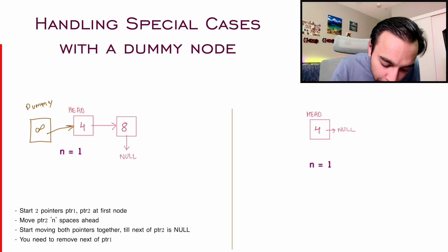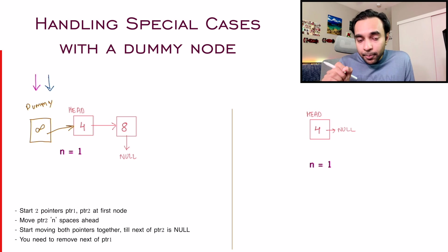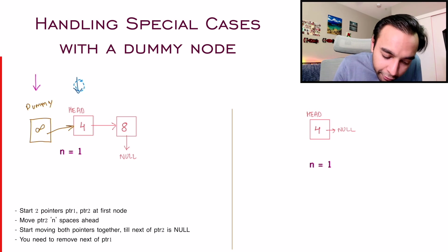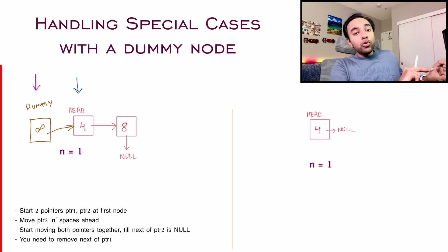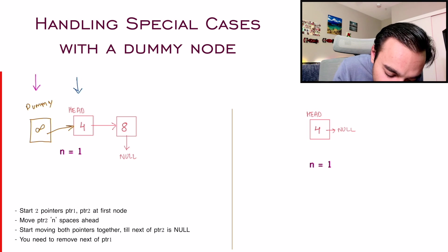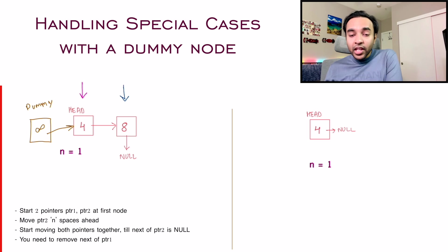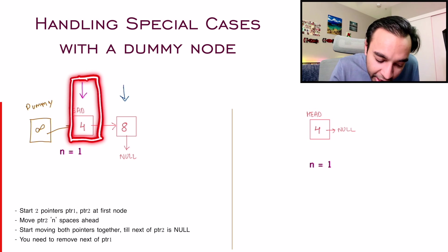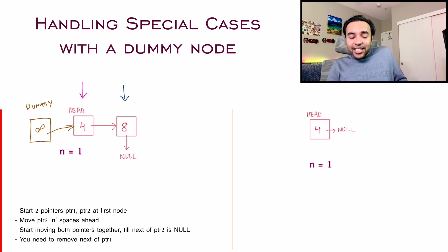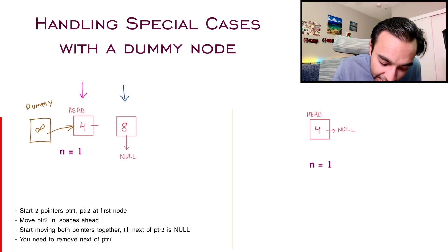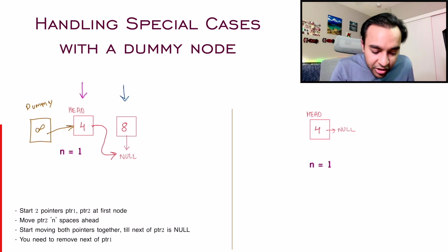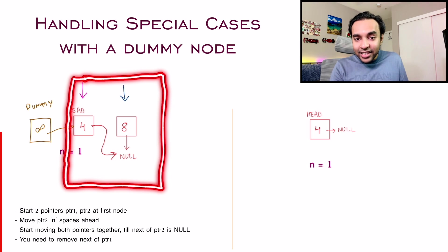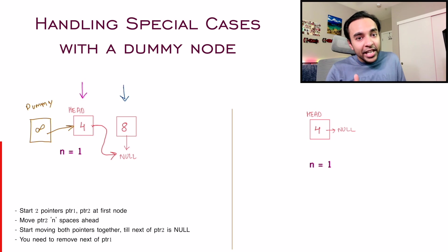Let us follow the same approach again. My list is very small and the value of n is 1. You have two pointers — the value of n is 1, so I take one pointer and advance it one space ahead. Now, what did we do next? You move both pointers until the next of the second pointer points at null. So I move both pointers and now the next of the second pointer is pointing at null — that is where you stop. And which node do you remove? You remove the node next to your first pointer. Your first pointer is here and you have to get rid of the next node. Just remove the reference, update it, and then return dummy.next — and you will be left with this list.